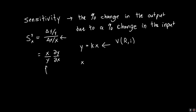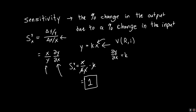So the sensitivity S of y as a function of x is just x over y, and here y is just equal to kx, times the derivative of y with respect to x, which is just k. So multiplied by k, everything cancels and we're just left with one. This tells us something really cool: no matter what the coefficient is, a sensitivity of one means the output is linearly related to the input x.